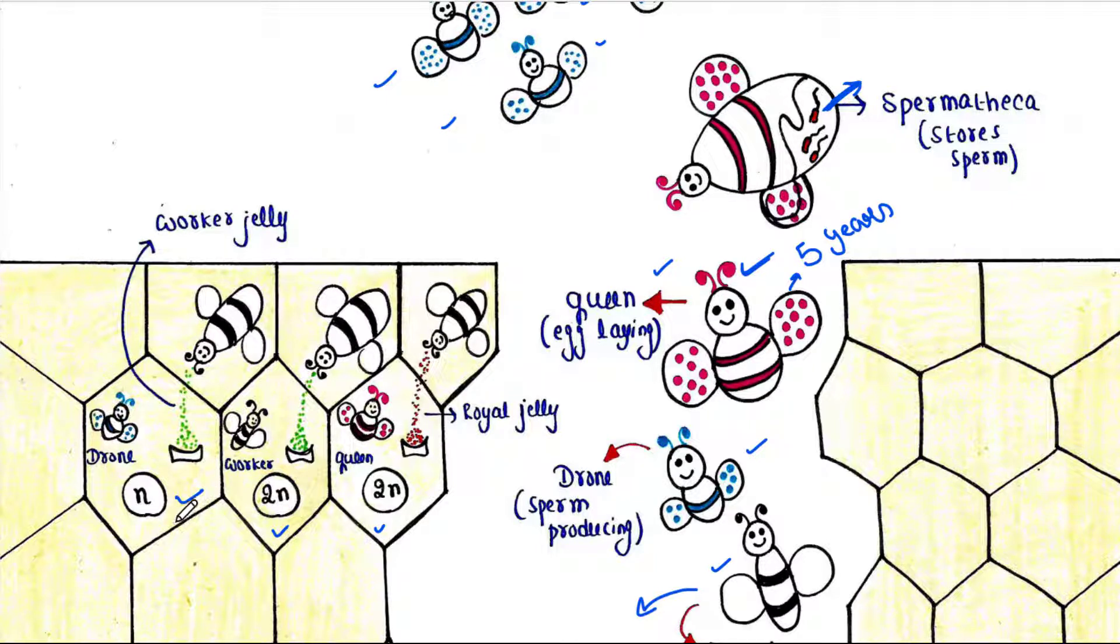If the egg is not fertilized, that means the egg is haploid. What happens? It hatches to generate a drone, that is the male honeybee.